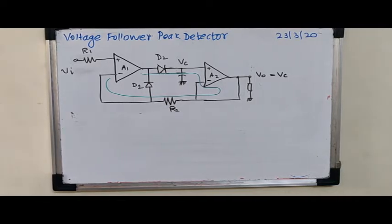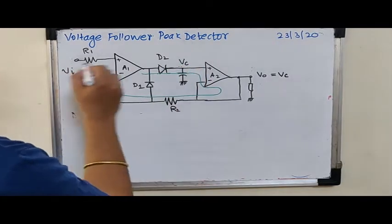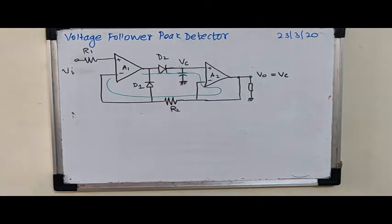So it works as a combined voltage follower. Vc gets charged until it equals Vi. Now, when Vi is greater than Vc,